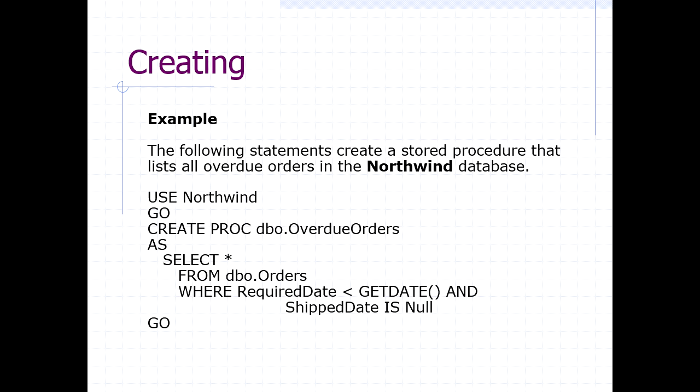We'll use Northwind to show what not to do. Creating a procedure called 'overdue orders' — this shows you a procedure can be as simple as wrapping up a select statement you commonly want to run. There are no parameters in this one because we don't have to tell it anything, but it's still dynamic because it uses GETDATE(). It selects all orders where the required date has passed and the ship date is null — it's overdue. A simple example with no parameters, and a result set is returned as a byproduct.